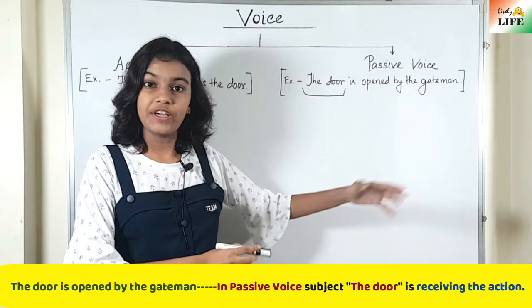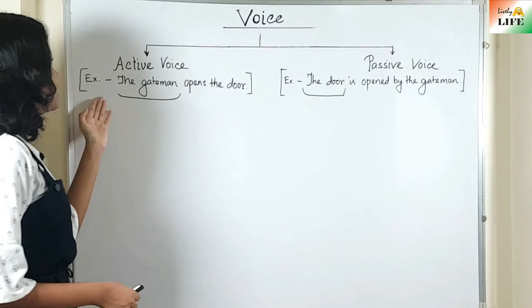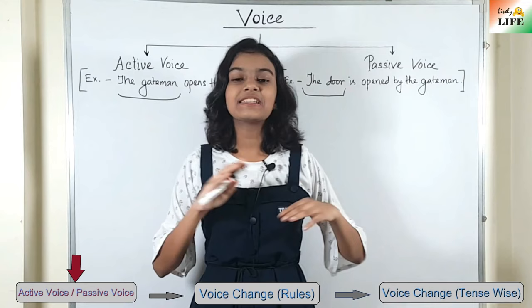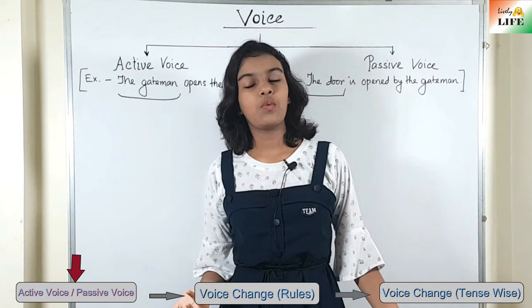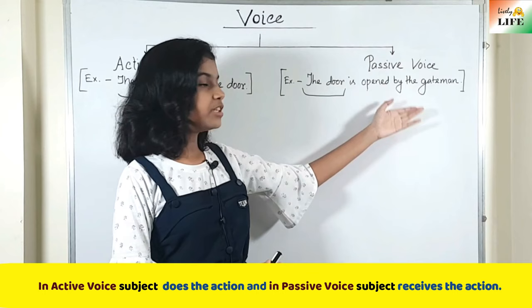Look at these two sentences — the meaning is entirely the same: 'The gateman opens the door' and 'The door is opened by the gateman.' The meaning is completely the same, but the way we say it is different. In active voice, the subject does the action; in passive voice, the action is done on the subject.